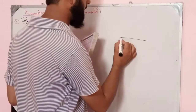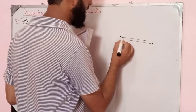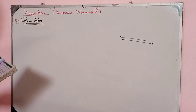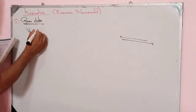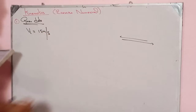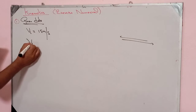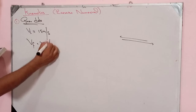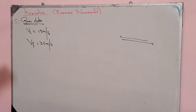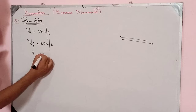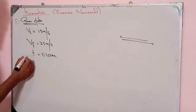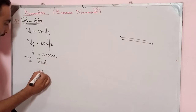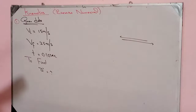Diagrammatically, the ball first moves west side, then velocity changes to east direction. Initial velocity is 25 meters per second and final velocity is 25 meters per second, and the time is 0.10 seconds. Now let's talk about acceleration.